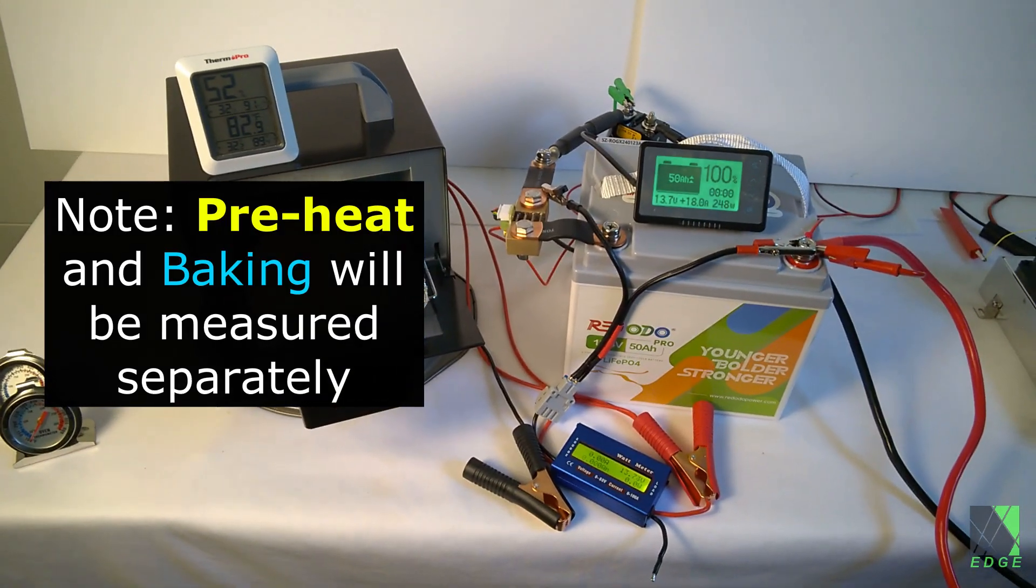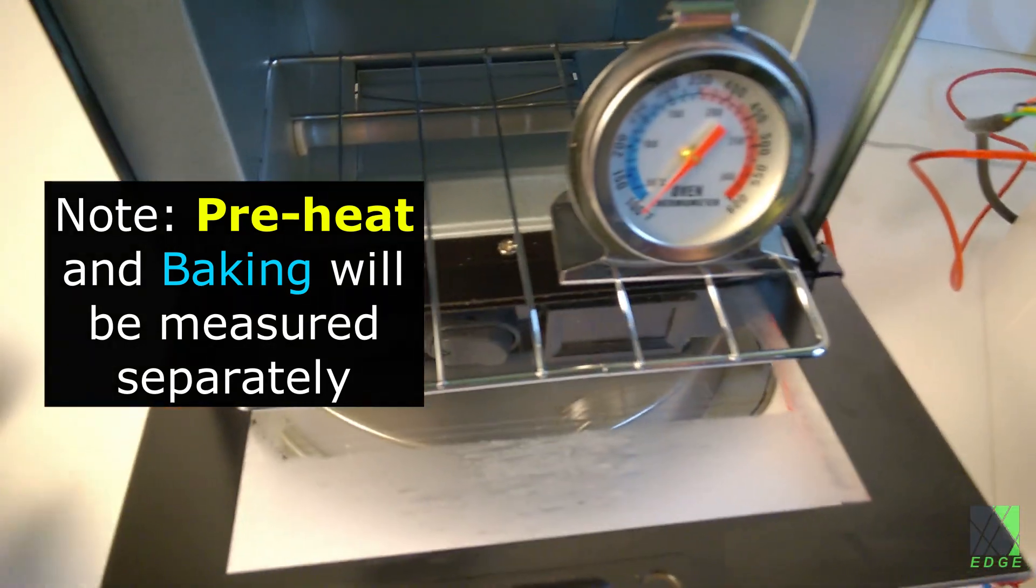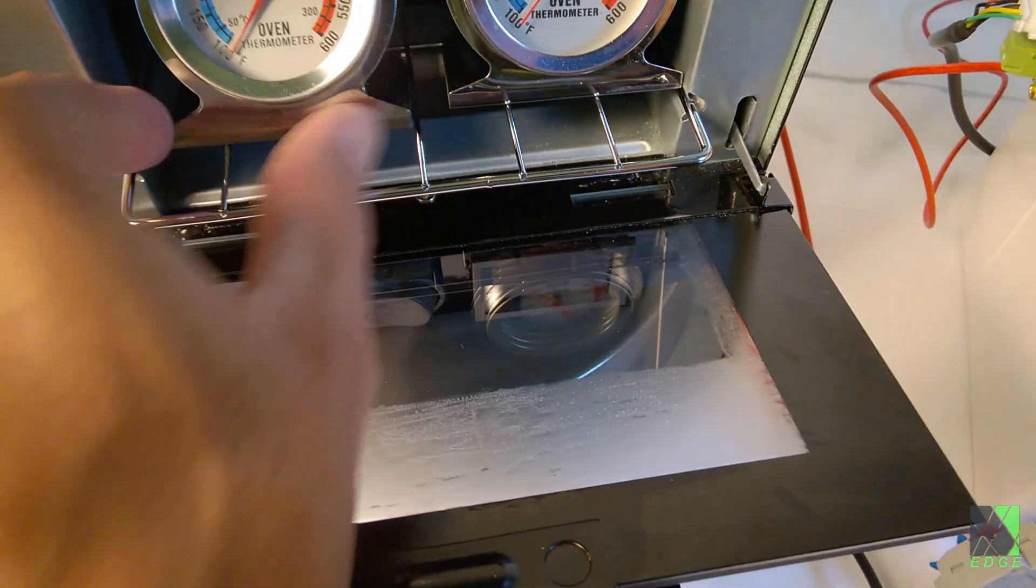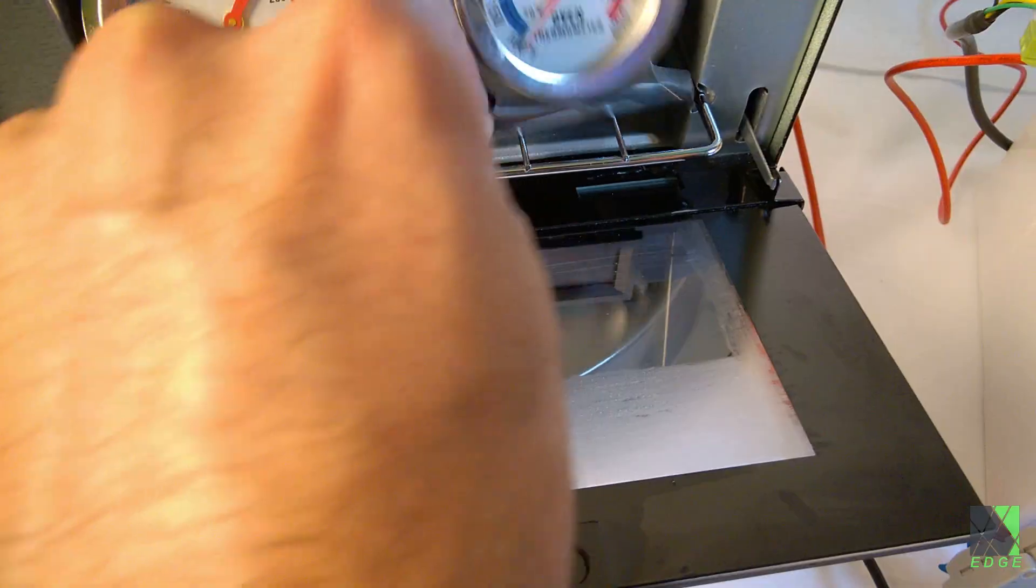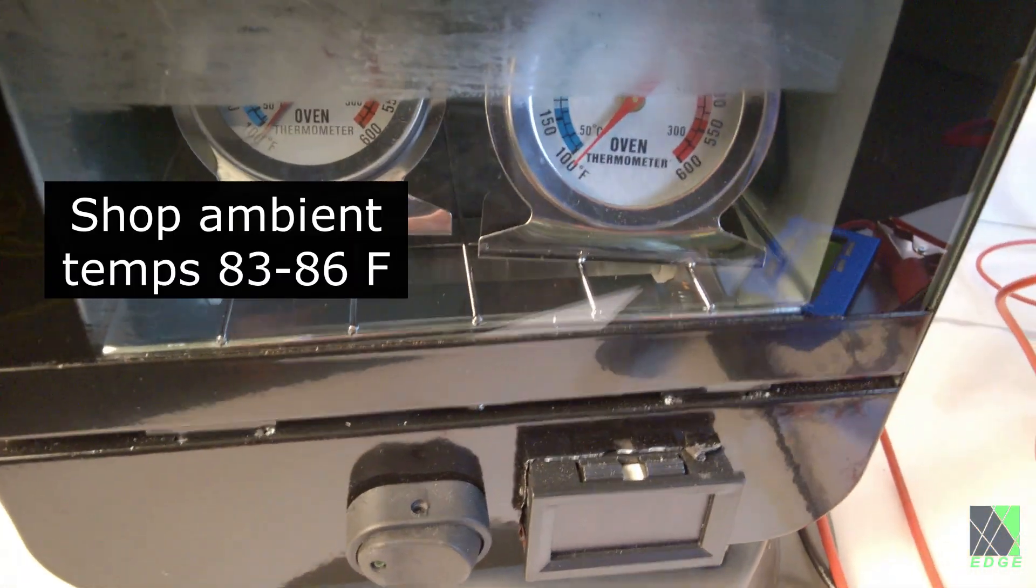First let's start with the preheat. I'll use some oven thermometers so that I can see what the temperature is. Let's go ahead and put those in there. That way I can see what the oven is reaching.